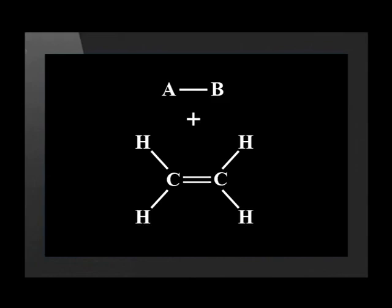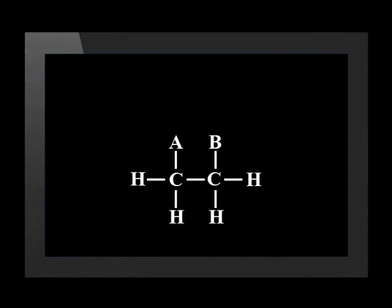So when the ethene joins with the molecule marked A-B, one of the double bonds breaks to make space for the atoms marked A and B. Look at how the product contains only single bonds between the carbon atoms. This means that addition reactions make saturated products.